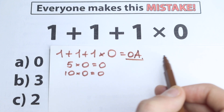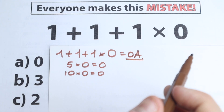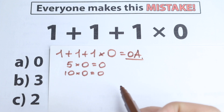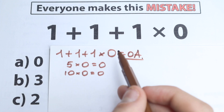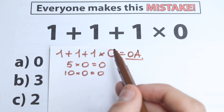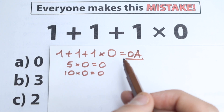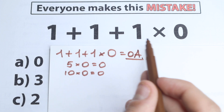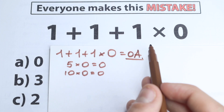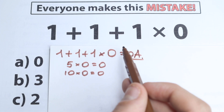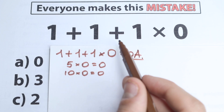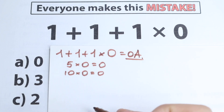I'm not going to say yet whether that is correct or incorrect. What you need to understand is that here we need to know about order of operations. This is not all addition, this is not all multiplication — we have a combination of addition and multiplication right here.